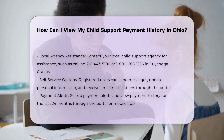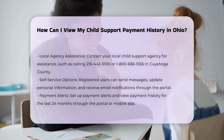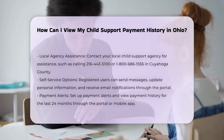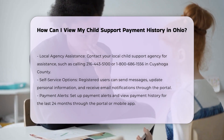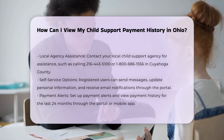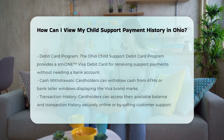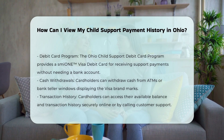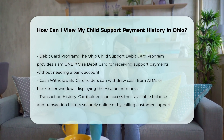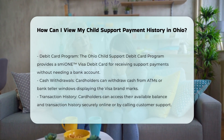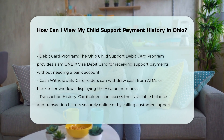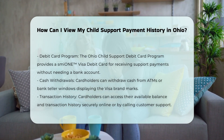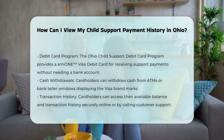Interactive voice response: if you prefer to use the phone, you can use the interactive voice response (IVR) system. Call 1-800-860-2555 toll free, or 1-866-500-3784 TDD for hearing impaired individuals. You'll need to enter your social security number and PIN to access your information. If you haven't set up a PIN, you'll be prompted to do so.